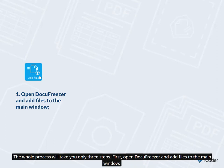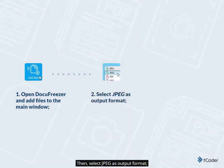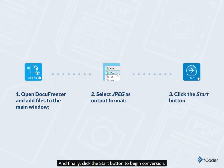The whole process will take you only 3 steps. First, open Docufreezer and add files to the main window. Then, select JPEG as the output format. And finally, click the Start button to begin conversion.